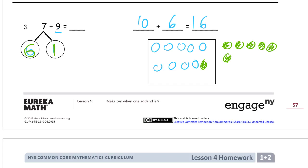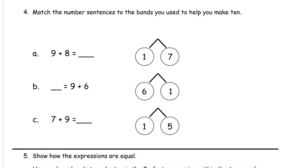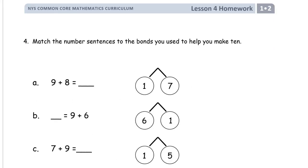This is just a way to write down a mental trick. Since 7 plus 9, think of it as 6 plus 10. Now we're matching number sentences to the bonds that we used to help make 10. This trick really works great with 9 because you just have to think of the other number as 1 less and then add 10 to it.